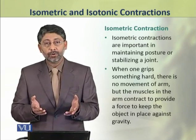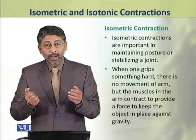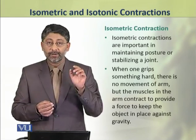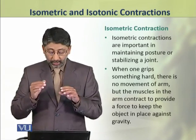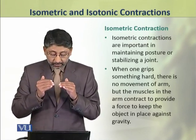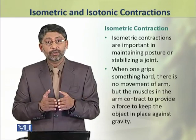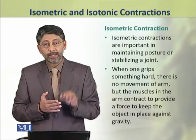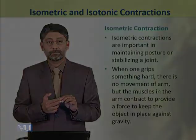When we hold something and stand still with no movement of the arm, during that time the arm muscles do contract — to provide force against gravity to keep that object in place — but during that time there is no change in the length of the muscles. This type of contraction is called isometric contraction.